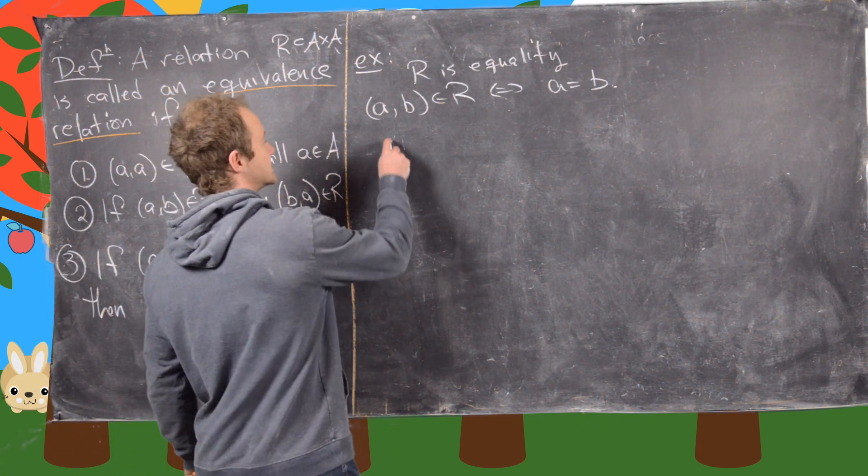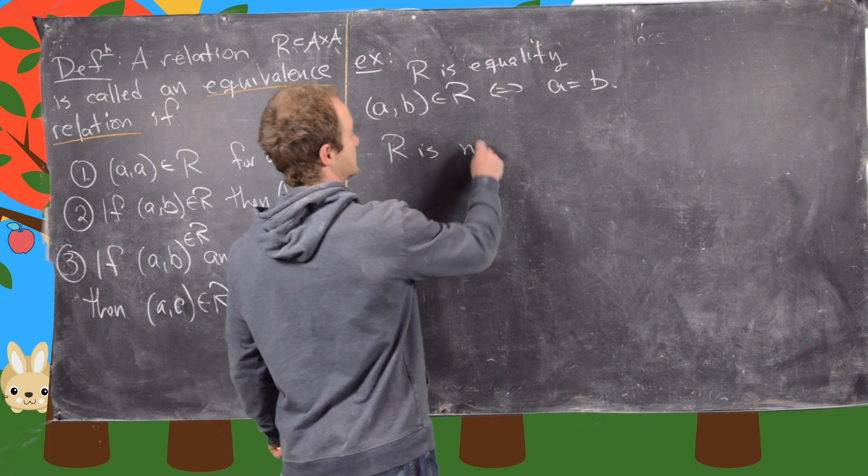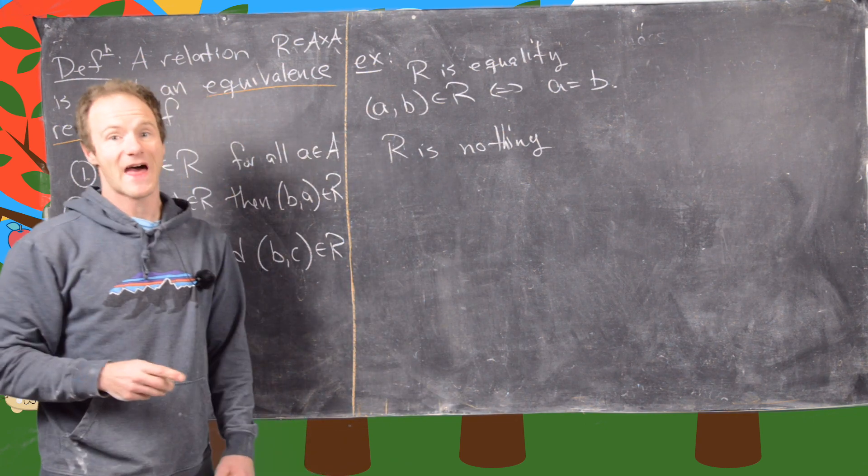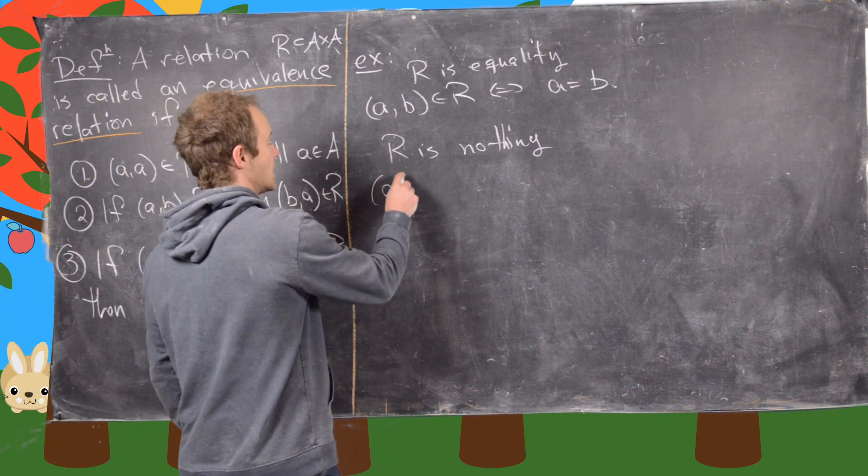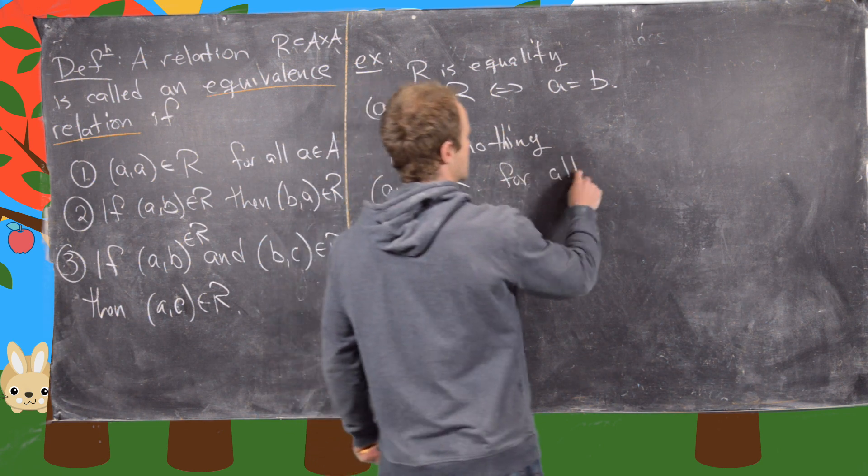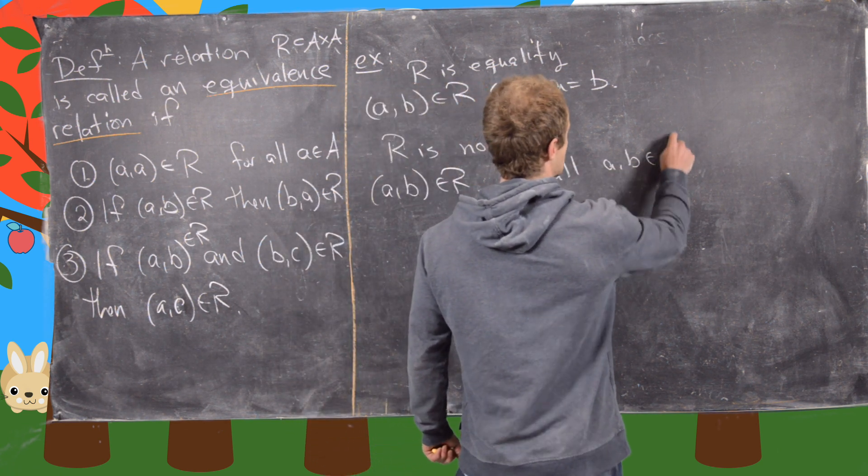And so another one I want to look at is R is nothing. So by that I mean that A comma B is in R for all A and B in A.